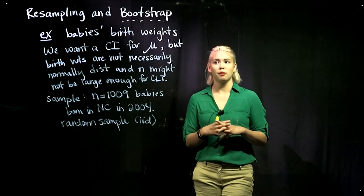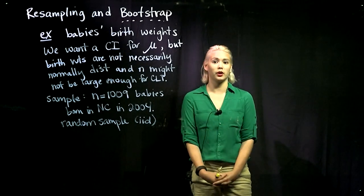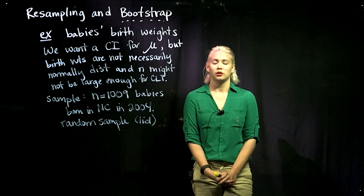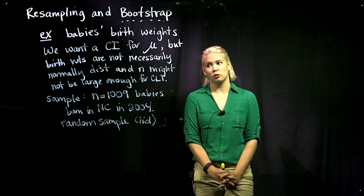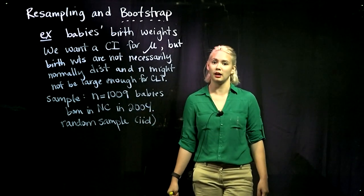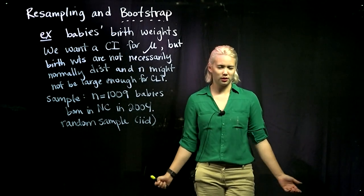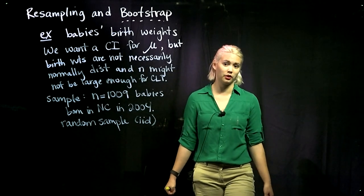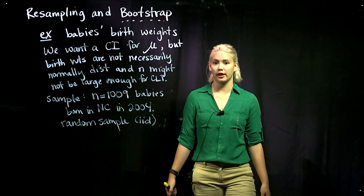We're looking at babies' birth weights, and we'd like to have a confidence interval for mu, which is the mean baby birth weight. If we had normally distributed data, we could use the procedures we learned about previously. But birth weights are not necessarily normally distributed, and the sample size might not be large enough for the central limit theorem to have kicked in.